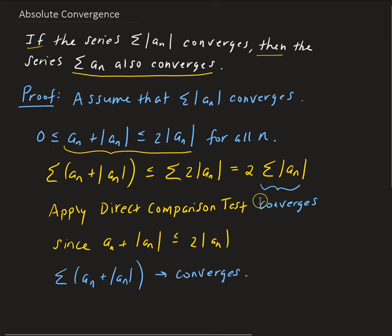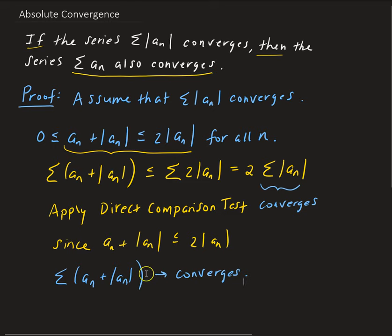The reason is because, going back to the direct comparison test, we have to look at what the nth terms are doing. This nth term is bigger than this nth term here, so we're going to use this as a bound. Since this one is acting as a bound, this must converge because the bounding series is converging. So now from here, we can use this idea to go ahead and prove the rest of the statement.